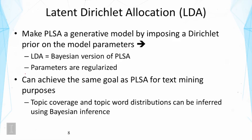LDA is proposed to improve upon PLSA and to make it a generative model by imposing a Dirichlet prior on the model parameters. Dirichlet is a special distribution that we can use to specify a prior. In this sense, LDA is just a Bayesian version of PLSA. The parameters are now much more regularized, and there are many fewer parameters. LDA can achieve the same goal as PLSA — computing topic coverage and topic word distributions.